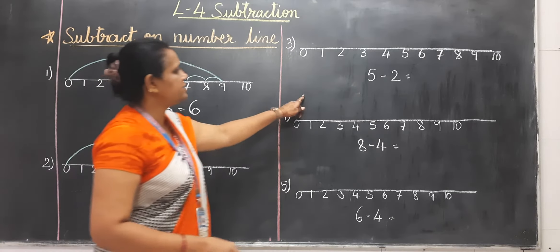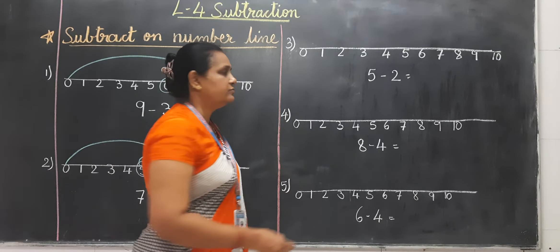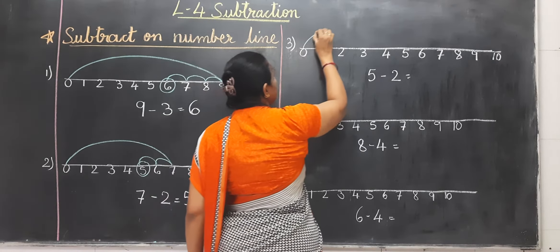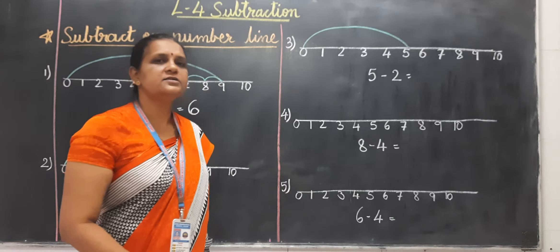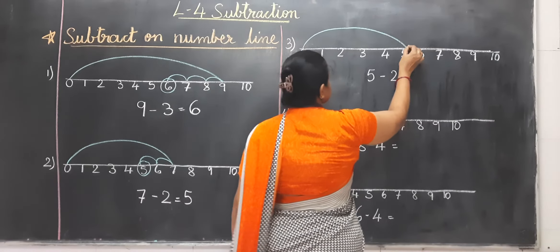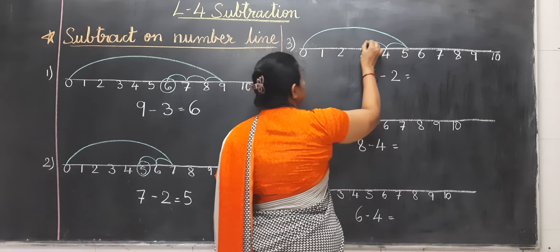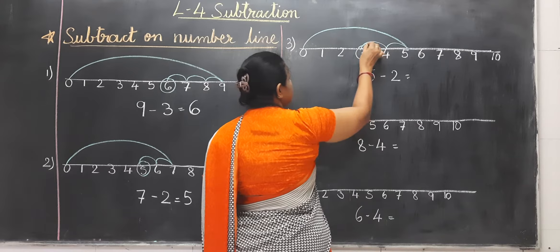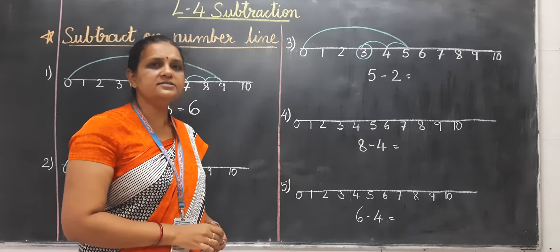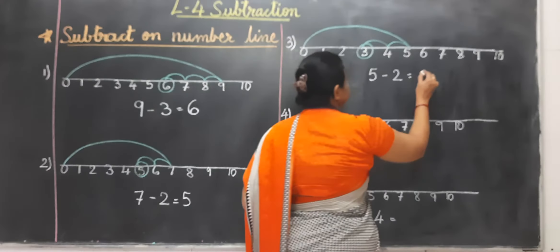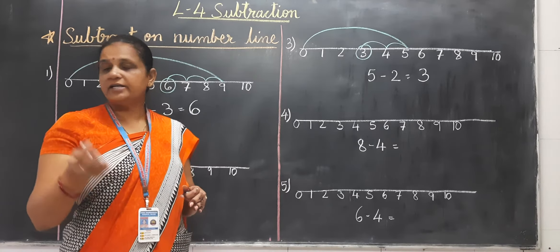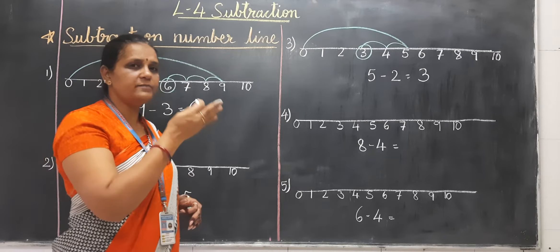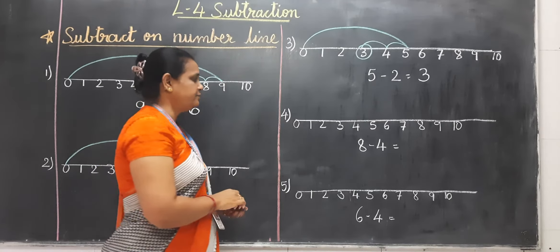Now, the next question is 5 minus 2. So from 0 we have to move up to 5, minus 2, so 1, 2. What is your answer? Your answer is 3. But in Subtraction we have to come inside.